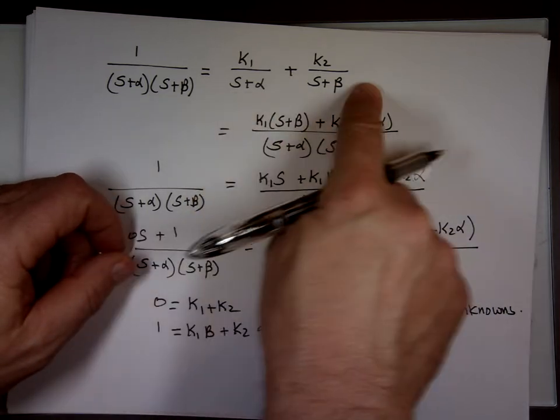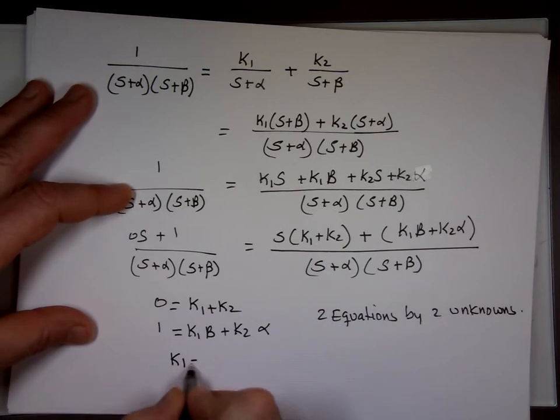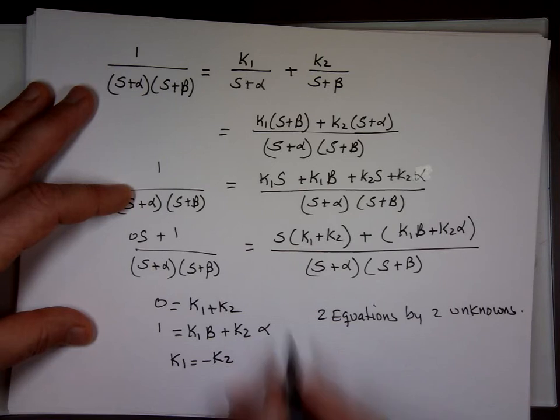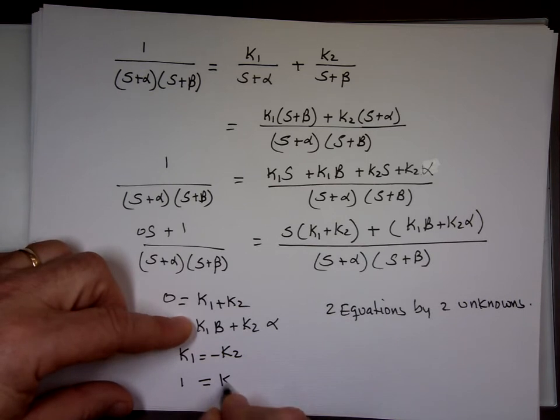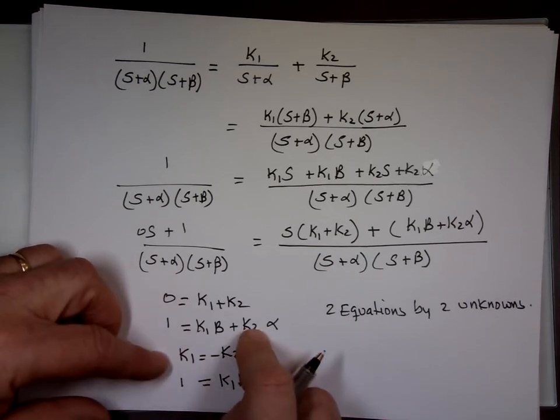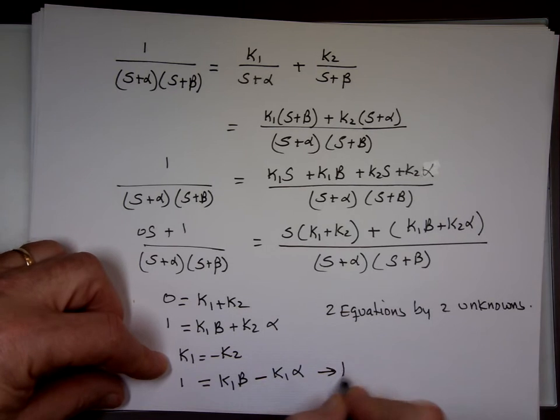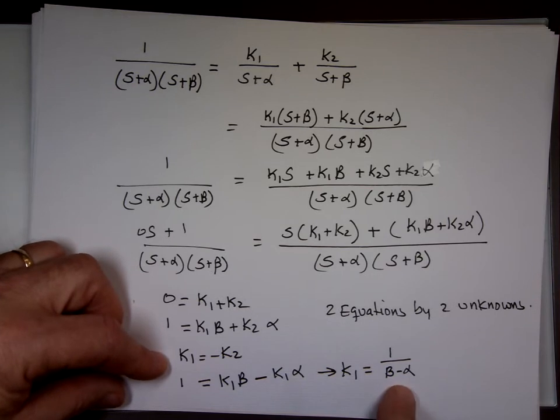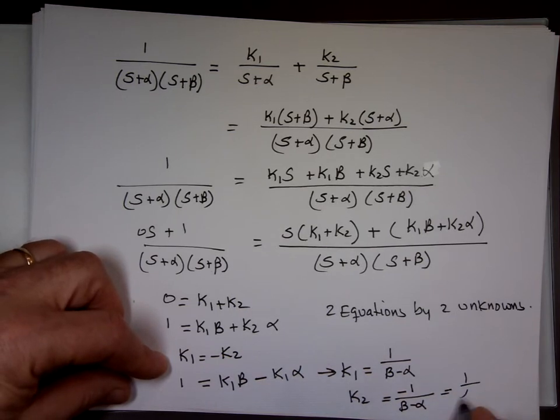So once you reach this point, how do you figure with K1, K2? Notice I can solve for K1. This equation says to me K1 equals negative K2 from the top equation. And if I come back and plug it in, it says 1 equals what? K1β. And instead of K2, I'm going to put what? Negative K1α. Can you get what the K1 is? It's 1 over what? β-α, right? And if I know what that is, can I figure out what K2 is? It's negative 1 over β-α. Then negative, you bring it to the bottom, it really becomes 1 over α-β in this case.